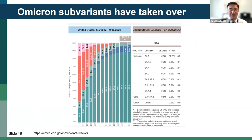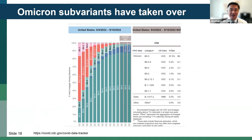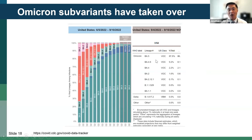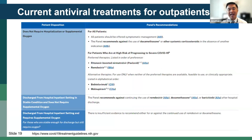Within the Omicron lineage, there have actually been multiple subvariants that have replaced each other. We started off with BA.1, then BA.2, then BA.4.5. Now there's another one, BA.4.6, that has reached about 9% of the population and is slowly increasing. But right now, predominantly we're at a BA.5 infection.